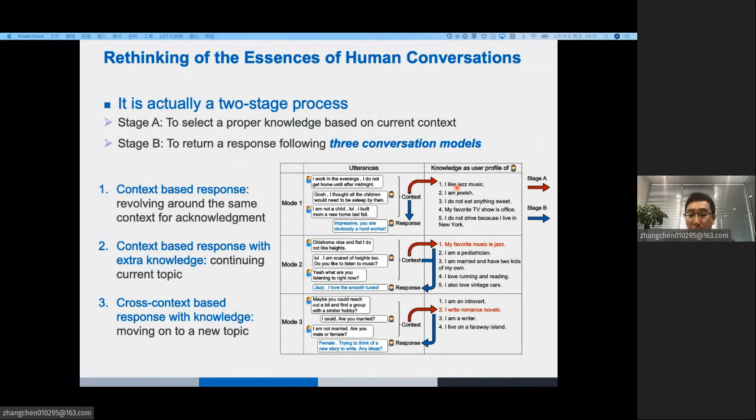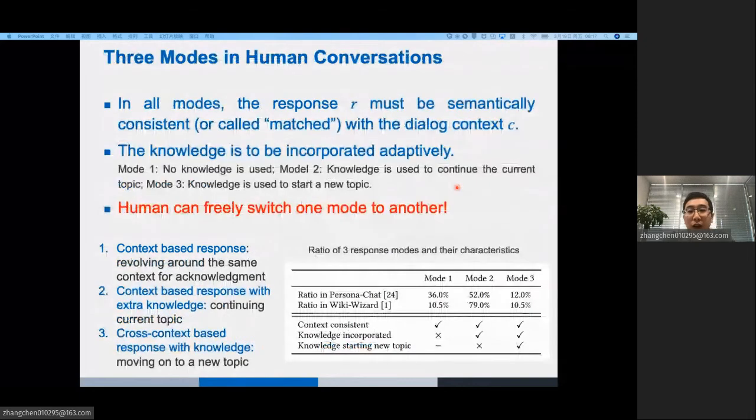Here are the results of our investigation. First, the basis of conversation is that in all modes, the responses R must be semantically consistent with the dialogue context C. Therefore, the requirement of semantic matching between R and C is necessary for all responses. Second, the condition of knowledge grounding is optional. For example, no knowledge is used in mode 1, but the extra knowledge is used in modes 2 and 3.